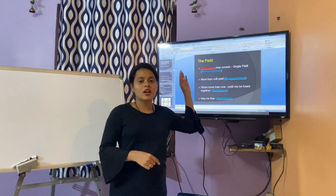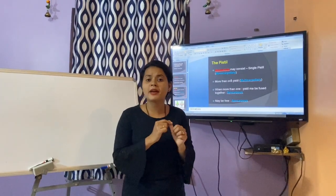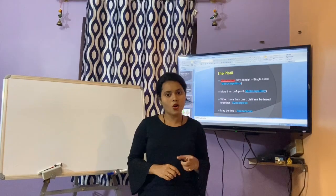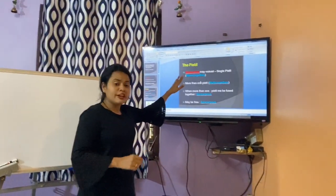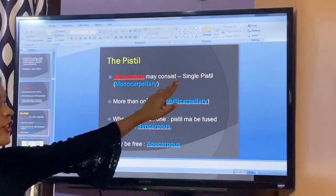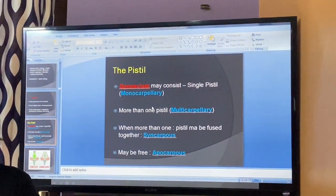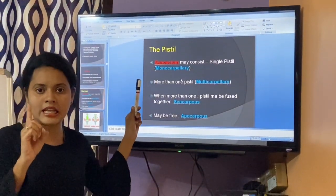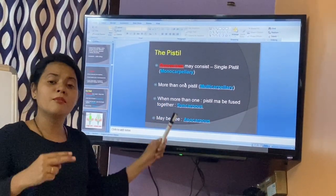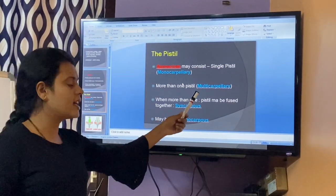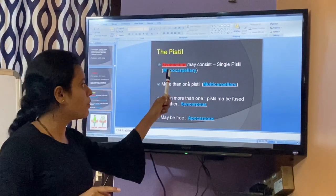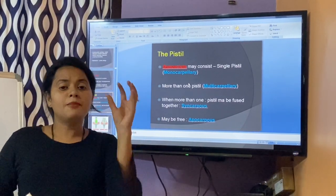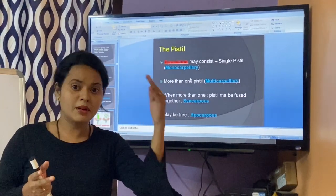The structure of pistil or carpel. We know that the female reproductive part of the plant is called gynecium. Gynecium consists of carpel or pistil. If a particular flower or gynecium consists of a single pistil, the flower is called monocarpillary — mono meaning single. If there are more than one carpel or more than one pistil, then it is called multicarpillary — multi meaning many.